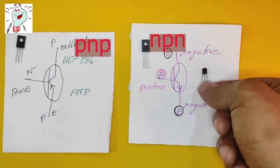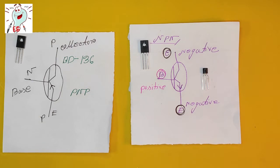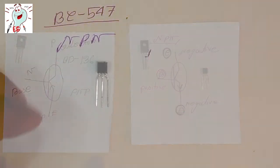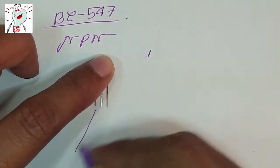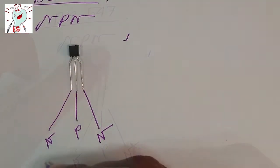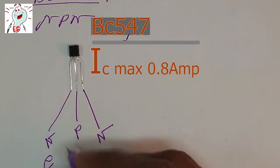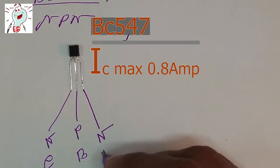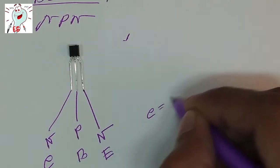A transistor is nothing but a PN junction. That's why a forward bias is always created on this transistor. Basically, there are three pins on a transistor: collector, emitter, and base.